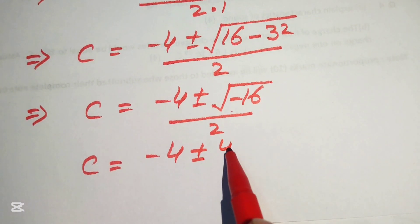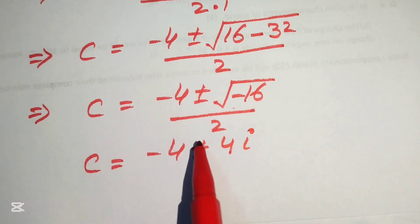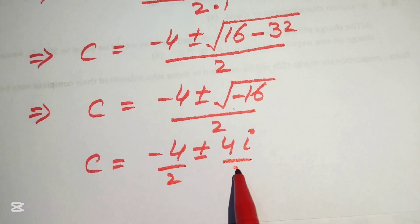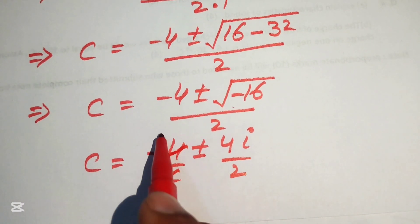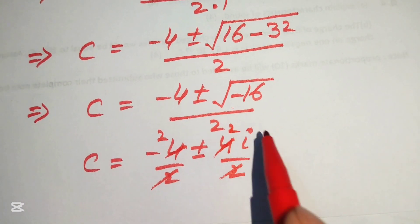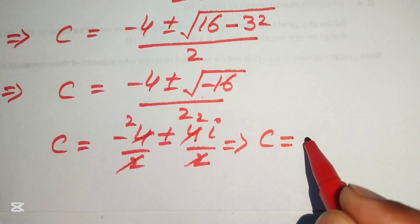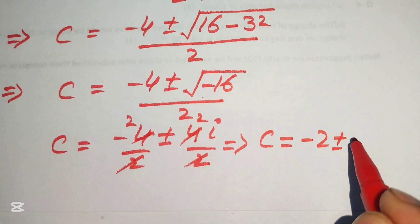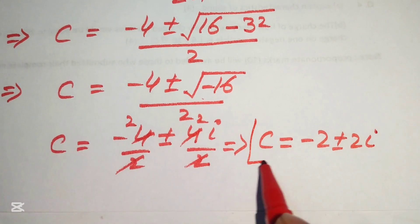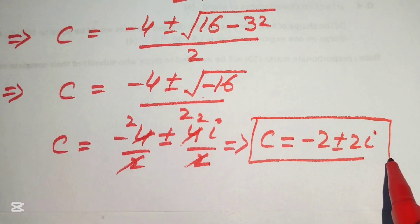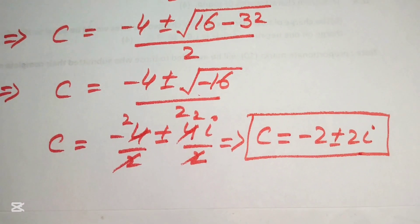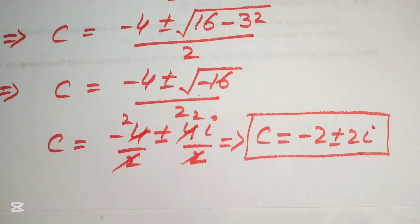Expanding the square root: square root of 16 is 4 and square root of minus 1 is iota. Breaking the fraction, 4 over 2 gives 2, so we get c equals minus 2 plus or minus 2i. These are the other two complex roots. Our equation has a total of four complex roots: 2 plus or minus 2i and minus 2 plus or minus 2i. Thank you for watching, please subscribe for more videos.